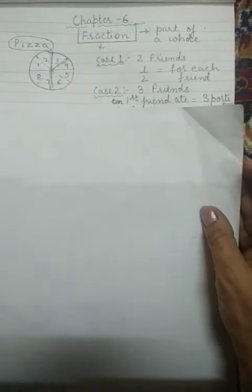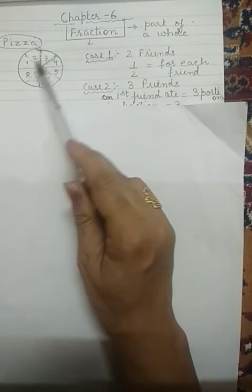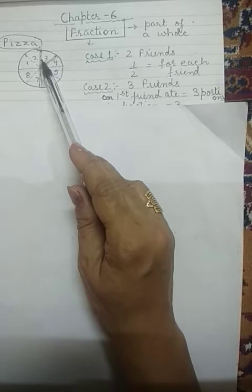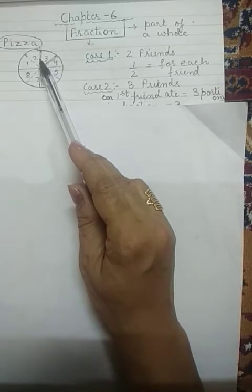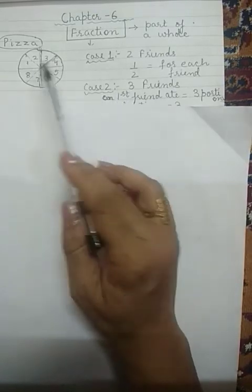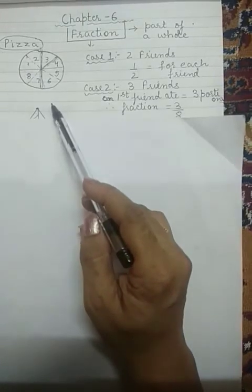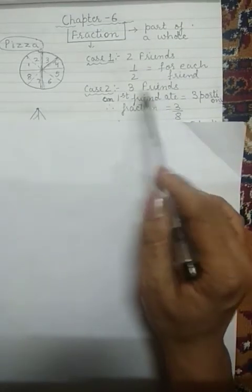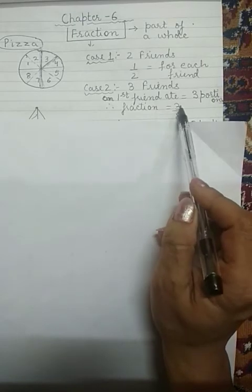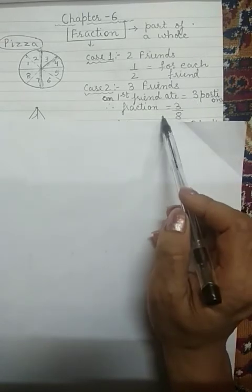Your first friend said he wants to eat 3 slices — portions 1, 2, and 3 are eaten by him. If I want to write down in terms of fraction, what is the fraction of pizza eaten by the first friend? Whenever we write a fraction, we count the total number of slices first — that total comes in the denominator. The fraction of pizza eaten by the first friend will be 3/8. The total number of slices come in the denominator, and the number of slices eaten come in the numerator.